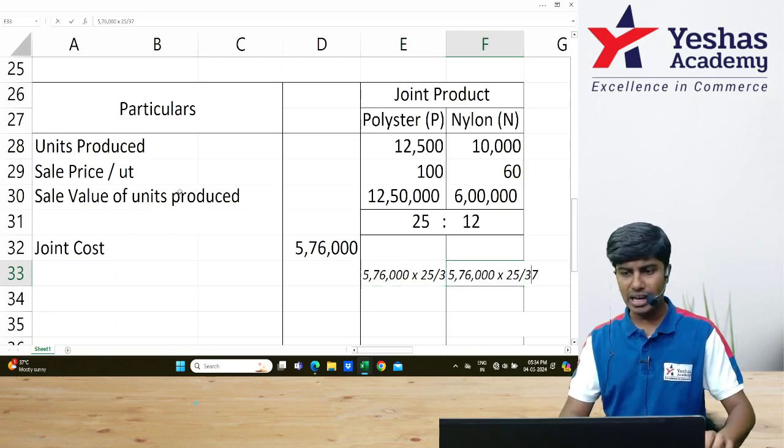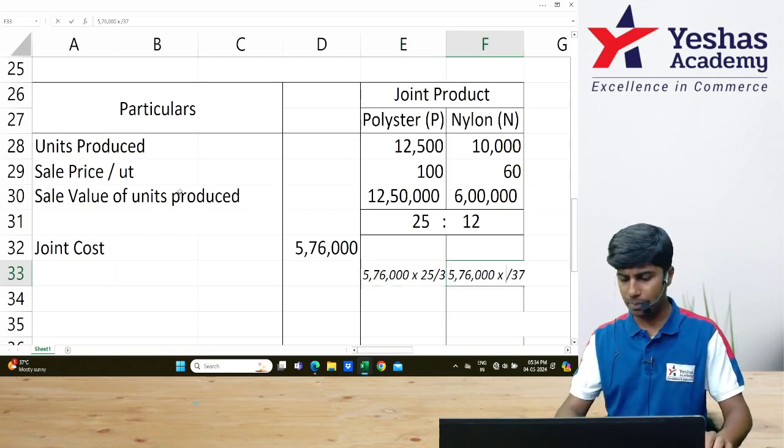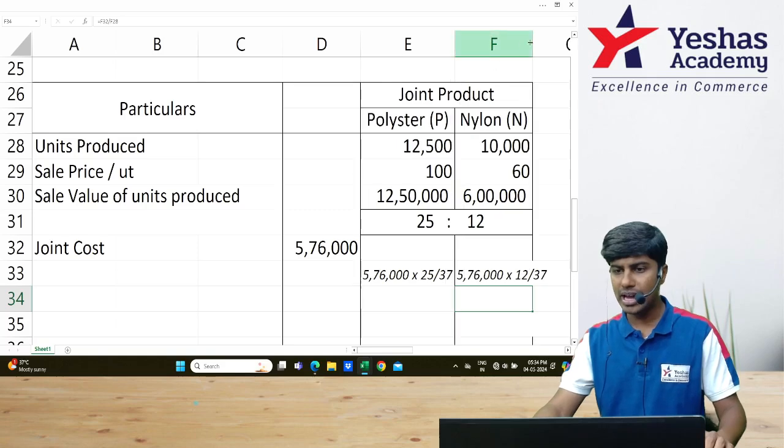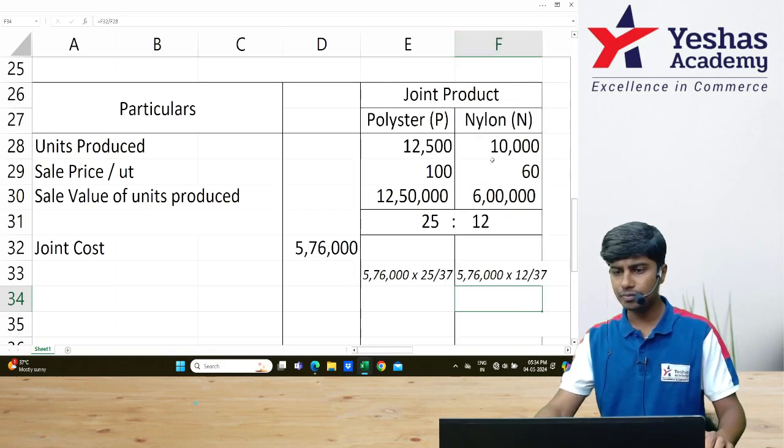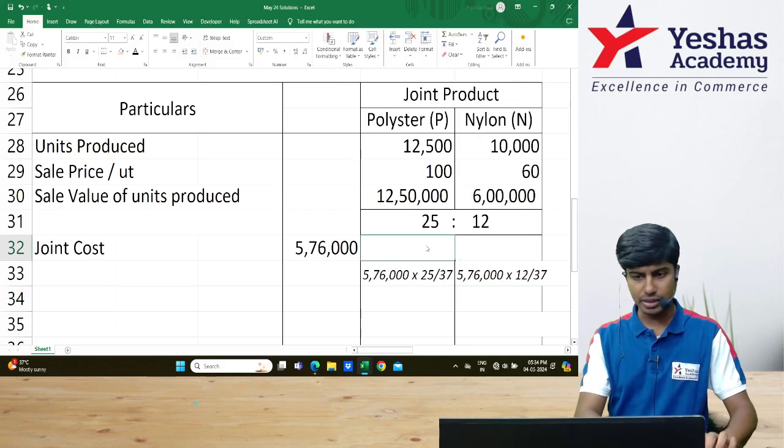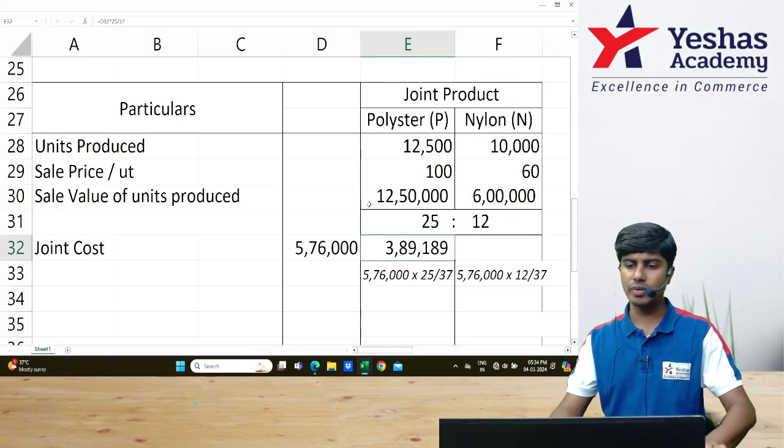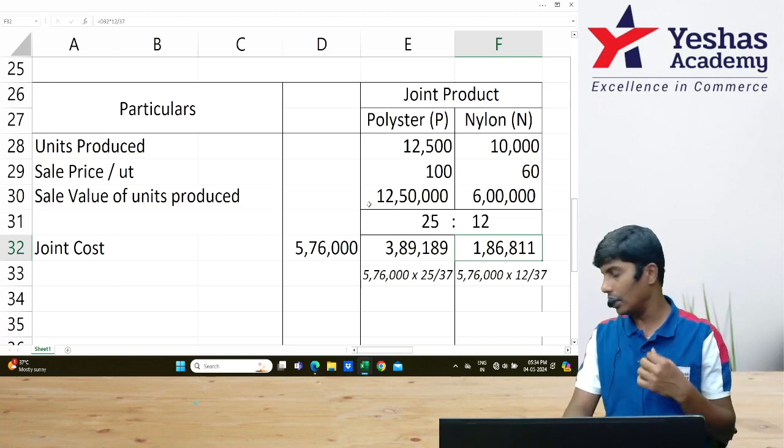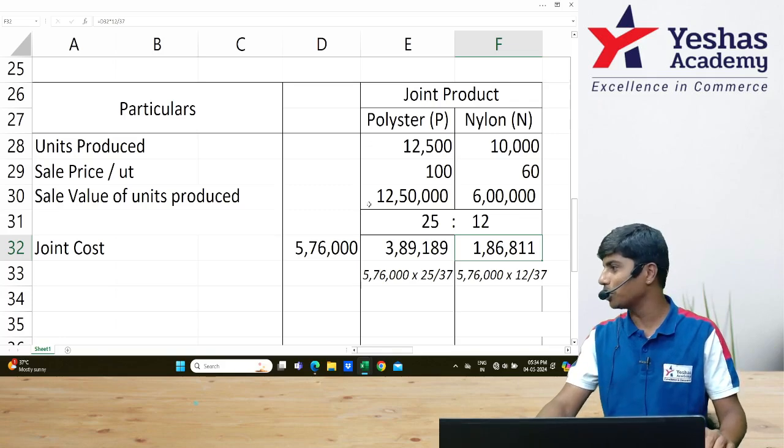Similarly, I will do ₹5,76,000 multiplied by 12 divided by 37. What do we get? ₹3,89,189 and ₹1,86,811. So this is the joint cost after apportionment to polyester and nylon.